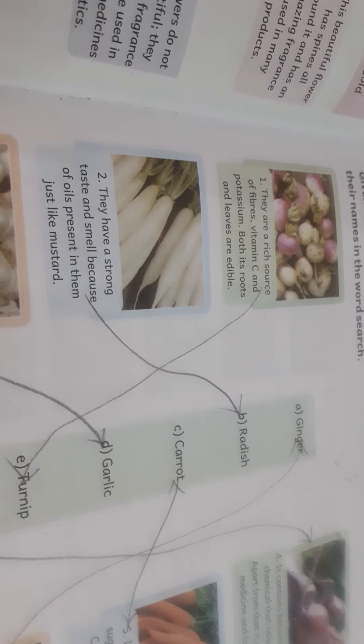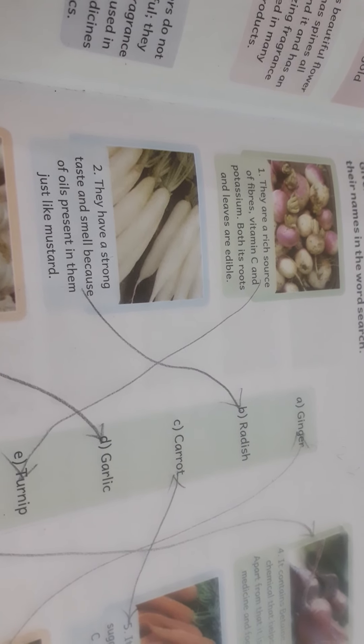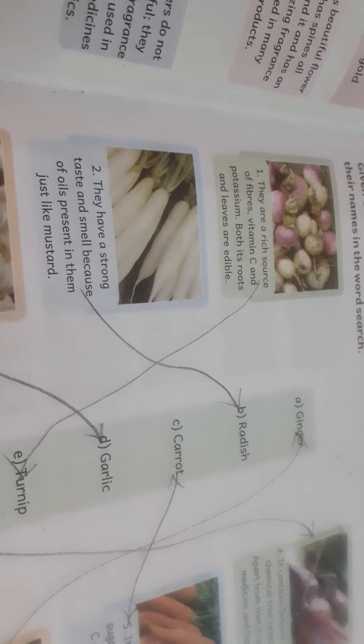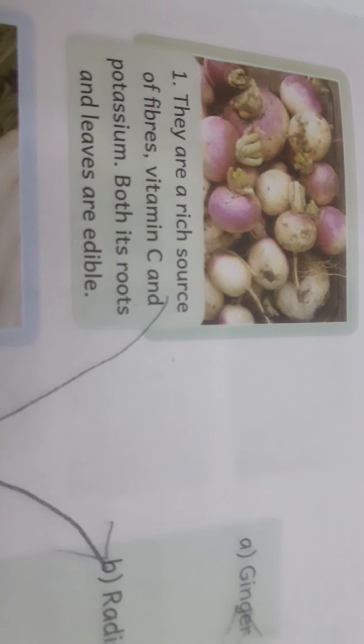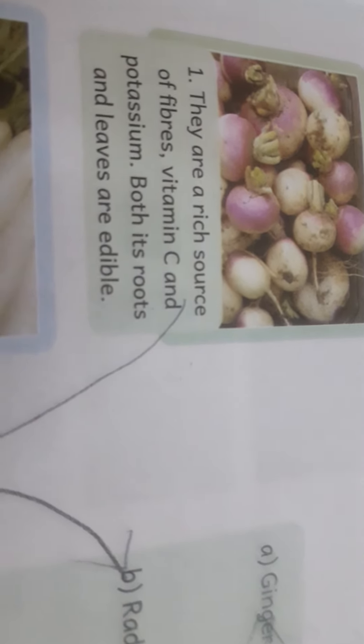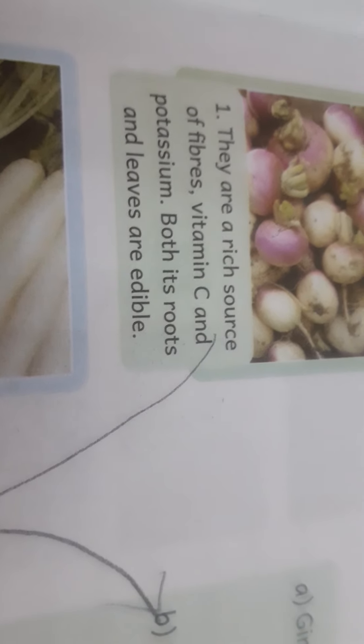First is turnip. They are a rich source of fiber, vitamin C, and potassium. Both its roots and leaves are edible.